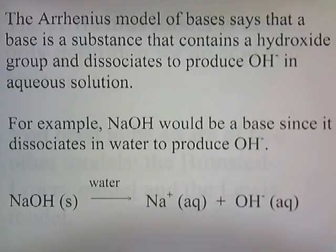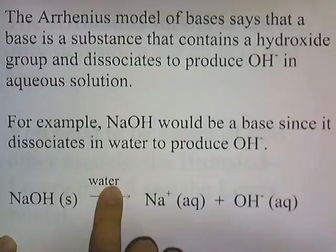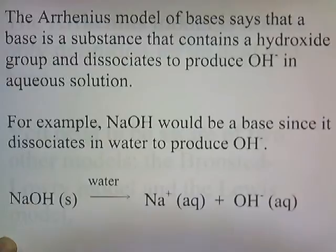The Arrhenius model of bases says that a base is a substance that contains a hydroxide group and dissociates to produce OH- in aqueous solution. For example, NaOH is a base since it dissociates in water. Solid sodium hydroxide put in water dissolves and dissociates, breaking apart to form Na+ and OH-. Since it produces OH-, it's a base.